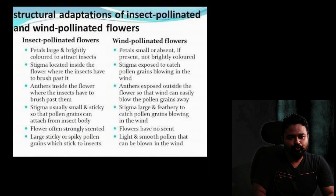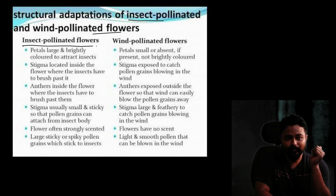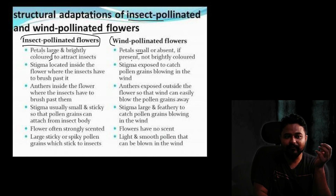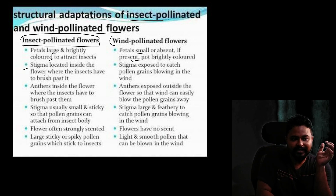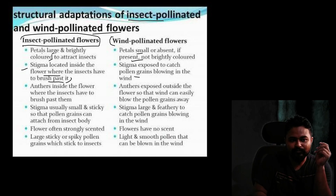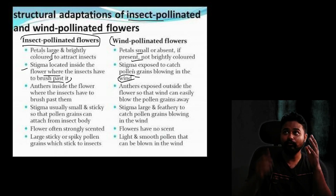Flowers are adapted differently for insect-pollinated versus wind-pollinated plants. Insect-pollinated flowers have large, brightly colored petals to attract insects. Wind-pollinated flowers have small or absent petals — not brightly colored — because the wind does the pollinating. The stigma in wind-pollinated flowers is exposed outside the flower to catch pollen grains blowing in the wind.